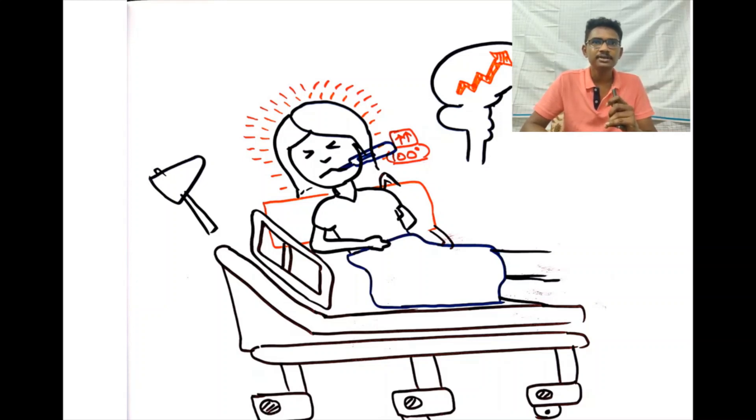She was admitted in the emergency in view of altered mental status as well as high-grade fever. The attendants told that she had an episode of seizure some three hours before. She was comatose at the time of examination. Her GCS was too low, and basic reflexes were normal and light reflexes were normal.